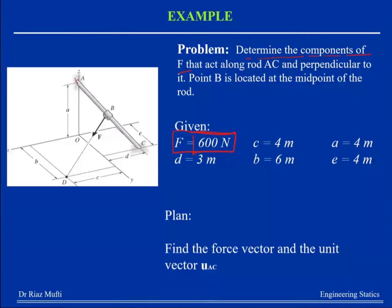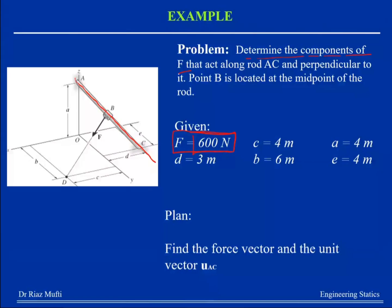You need to find the unit vector AC. The unit vectors of AC, AB, and BC are all the same because a unit vector only gives you the direction. So you find unit vector AB, or AC, or BC — they are equivalent. Then you do a dot product between F and AC to find the angle. Once you have the angle, you get the projection of F onto AC, and you can also find the perpendicular component using the Pythagorean theorem or by adding/subtracting angles.